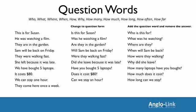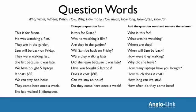'They come here once a week.' Change to question form: Do they come here once a week? Add 'how often': How often do they come here? And your last example: 'She had walked five kilometers.' Question form: Had she walked five kilometers? And now add the question word: How far had she walked?